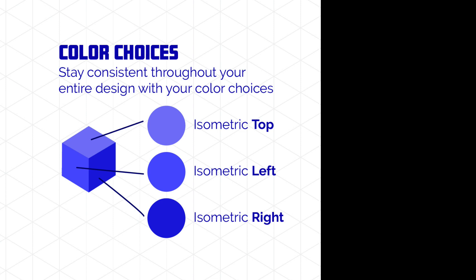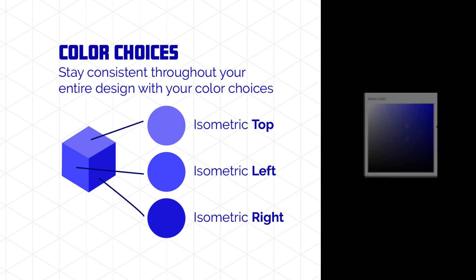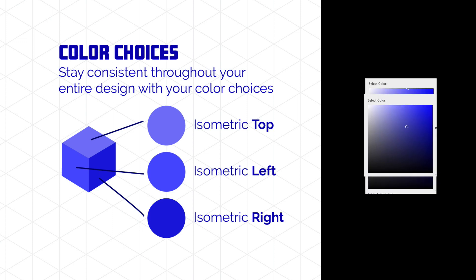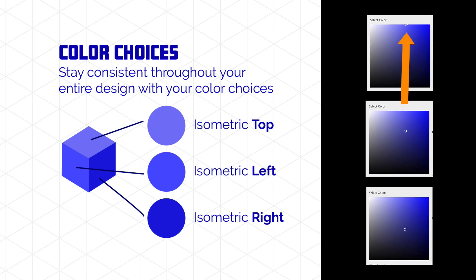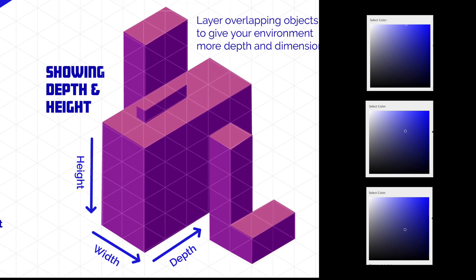When creating your different shades, I like to start out with the middle shade — in this case, blue. Then I go to my color picker and move up my selection to add a little more white or highlight to create a highlight color. Then I take my middle shade and move my color picker downward to create my darker shadow shade. So now we have a highlight color, a shadow color, and something a little bit in the middle.